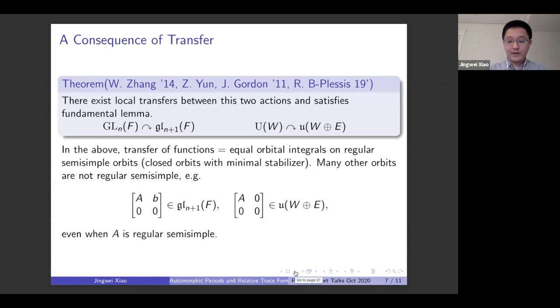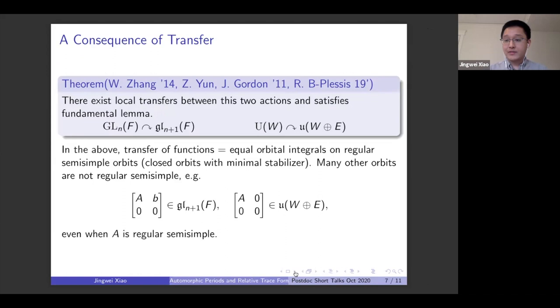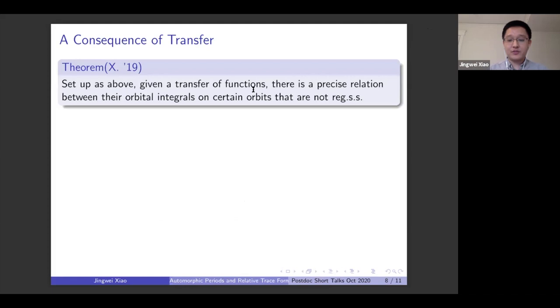And what I'm going to show is, what I'm able to show is for these specific orbits, the transfers still give you some relations on these orbits. So if you have a transfer function in the previous sense, then there is a precise relation between their orbital integrals on certain orbits that are not regular semisimple. This includes orbits I wrote just now, these specific orbits. You can still make sense of their orbital integrals and for any matching function, they would produce some consequence.